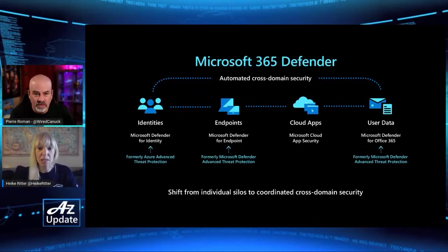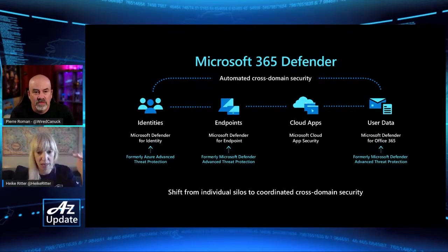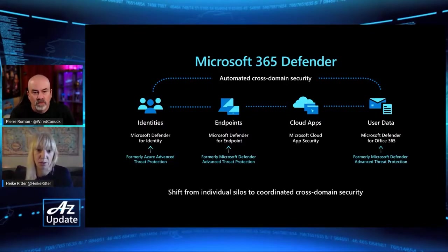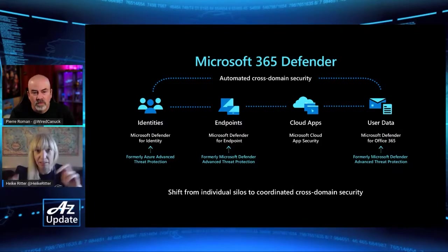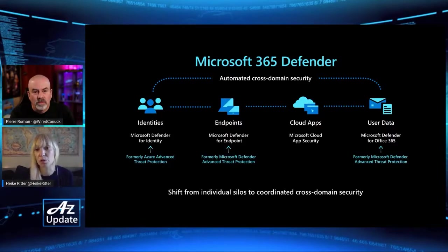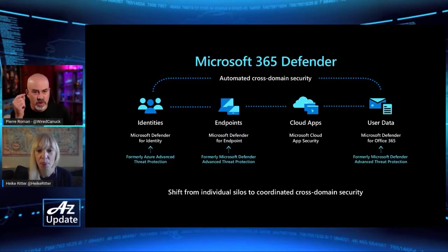We also do automation across those domains. If I see something suspicious on an endpoint triggered by a user, I can go and clean the user in Microsoft Defender for Identity — automation goes and cleans up across those domains. You mentioned one word that stuck with me from my old ITIL background: 'incident.' Does the system make a distinction between events, problems, and incidents?